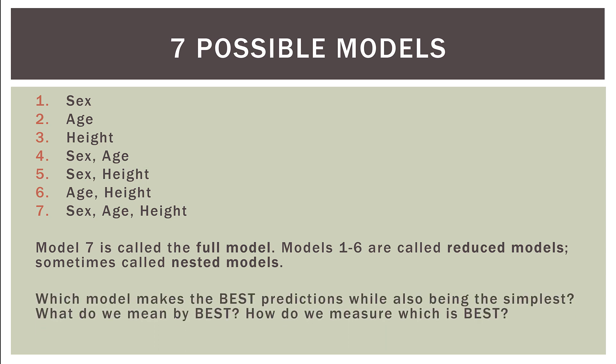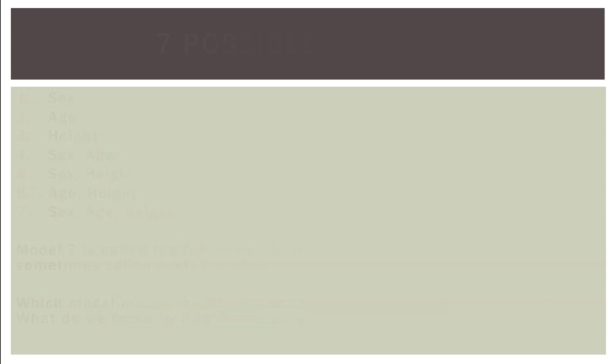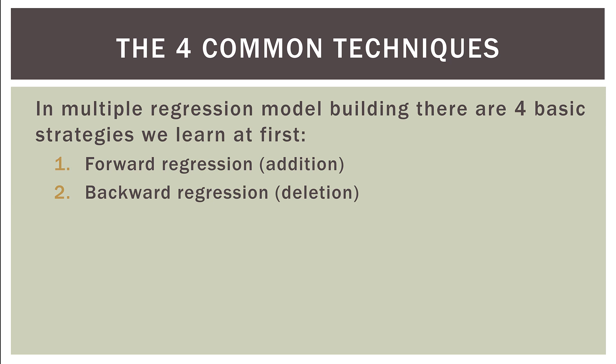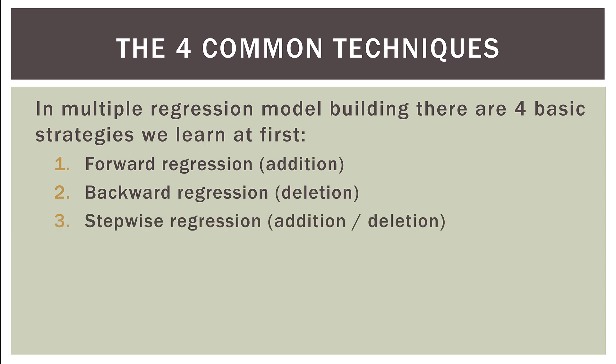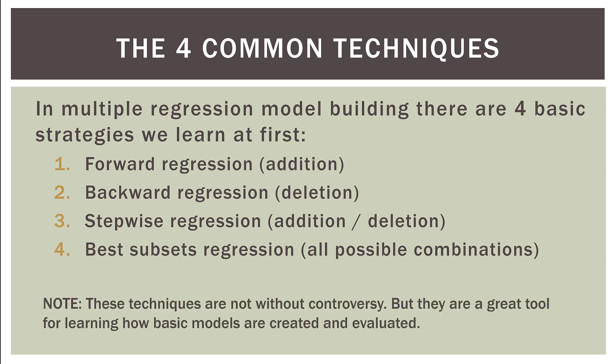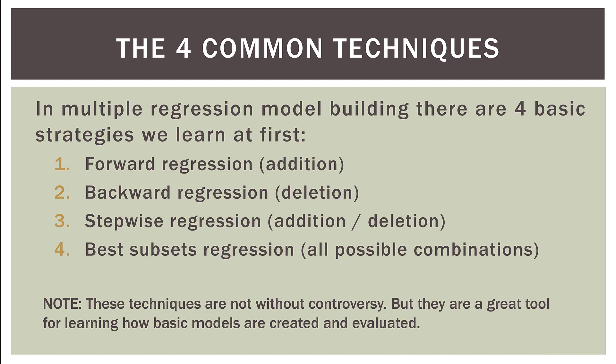The fundamental questions we're asking are: which model makes the best predictions while also being the simplest, and how do we measure which model is best? The four common techniques in multiple regression model building are: forward regression (or addition regression), backward regression (or deletion regression), stepwise regression — a combination of the first two — and best subsets regression, based on all possible combinations of variables. These techniques are not without controversy, but they are great tools for learning how basic models are created and evaluated.